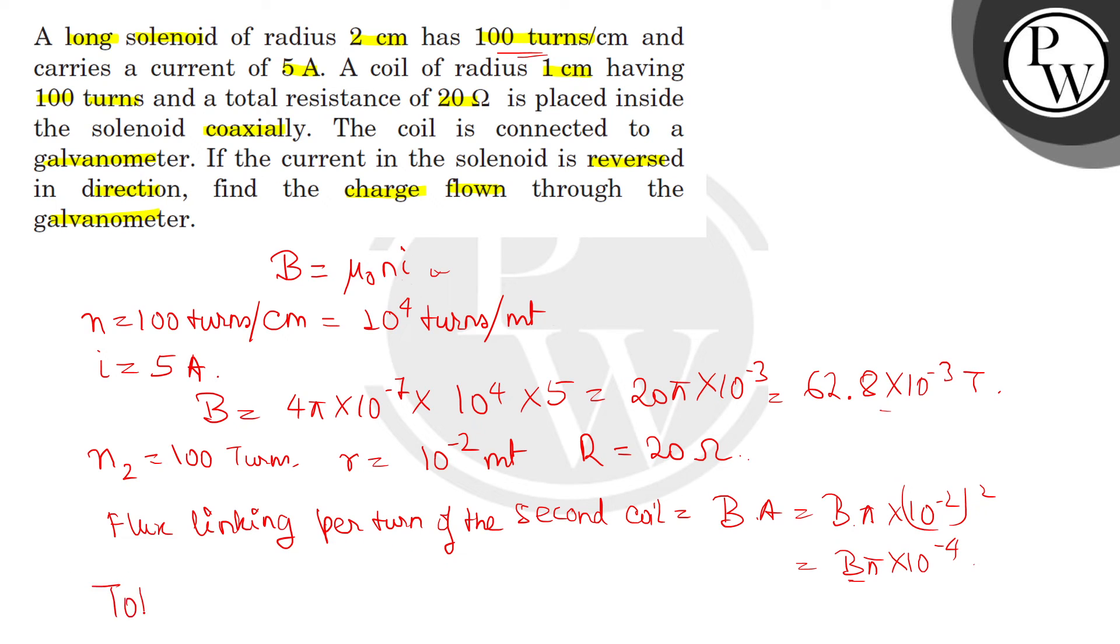Now the total flux, that will be this value multiplied by N₂ that will give us the total flux. So N₂ multiplied by Bπ × 10⁻⁴ and that will give us Bπ × 10⁻².